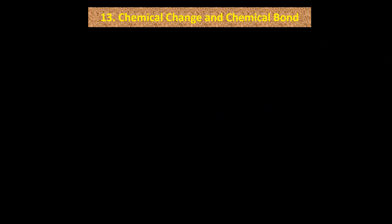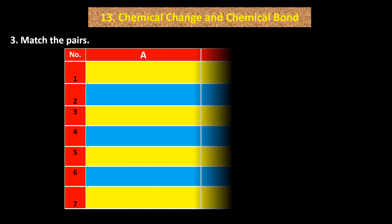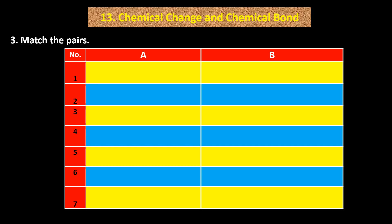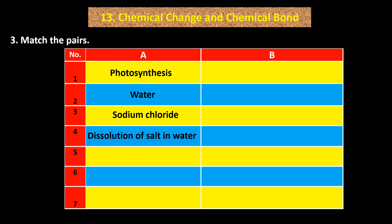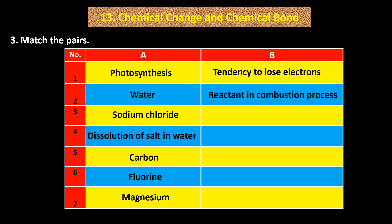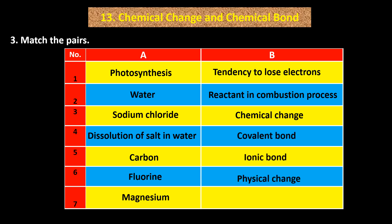Question number 3: Match the pairs. Column A: 1. Photosynthesis, 2. Water, 3. Sodium Chloride, 4. Dissolution of Salt in Water, 5. Carbon, 6. Fluorine, 7. Magnesium. Column B: Tendency to lose electrons, Reactant in Combustion Process, Chemical Change, Covalent Bond, Ionic Bond, Physical Change, Tendency to form Anion.